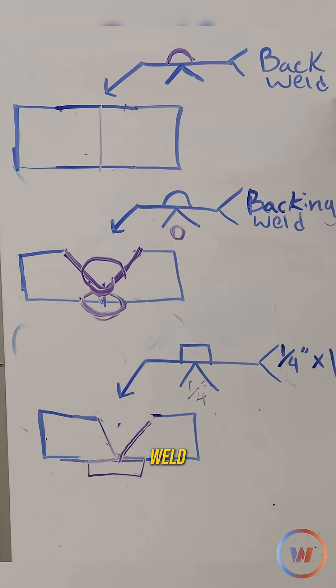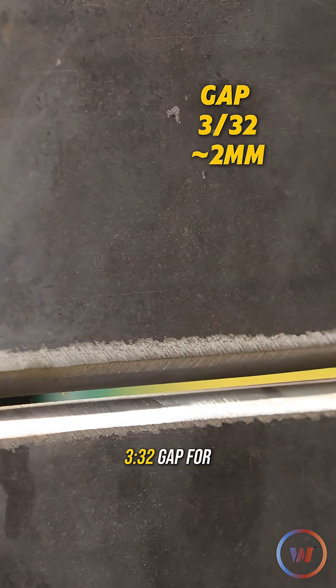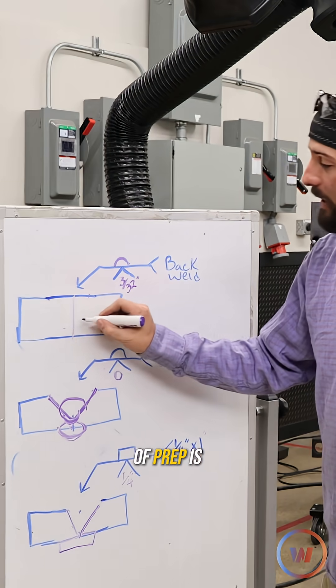For this instance on the back weld I've actually got a root opening for our plates to be a little bit wider. I've got a 3/32 gap for this and remember we're running flux core so my depth of prep is actually a quarter of an inch.